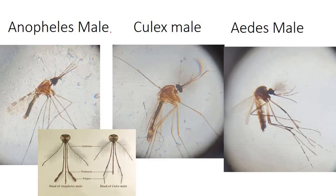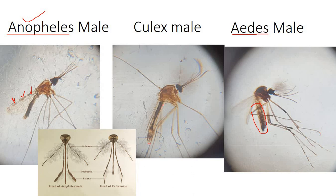We now move to the adult mosquito. When you identify spotted wings, you can directly call it Anopheles. When spotted wings are absent, look at the body. When there are alternate bands of black and yellow, you can call it Aedes mosquito. When both spotted wings and body bands are absent, you can call it Culex mosquito.